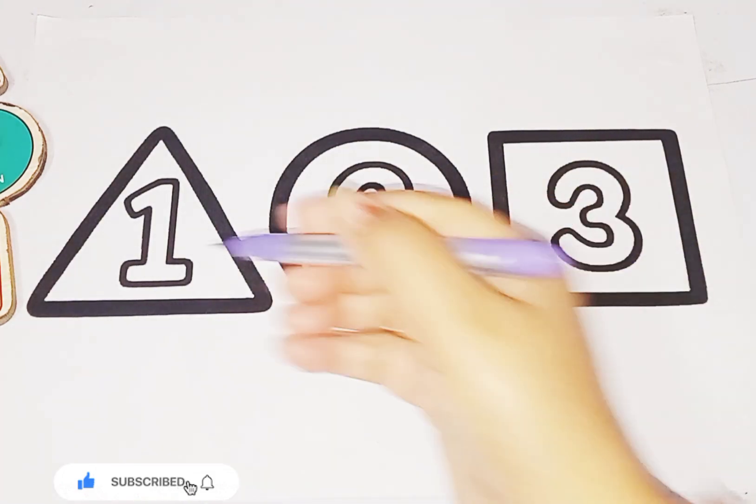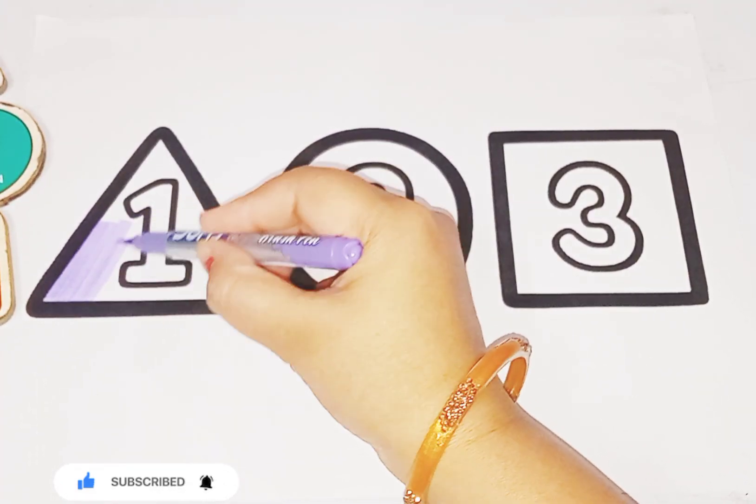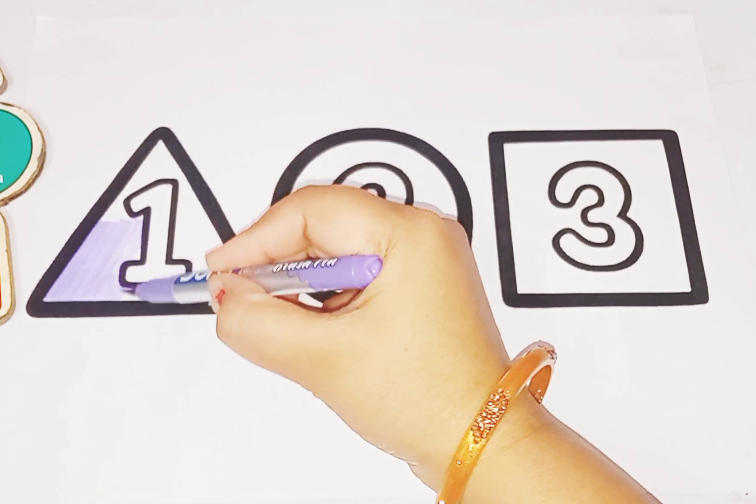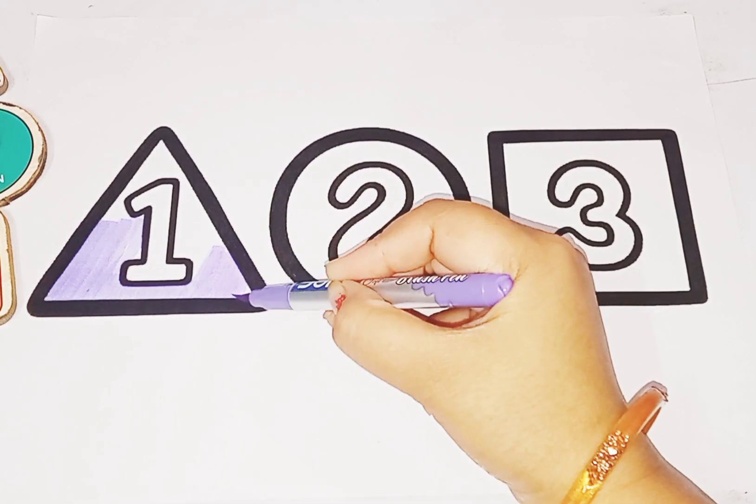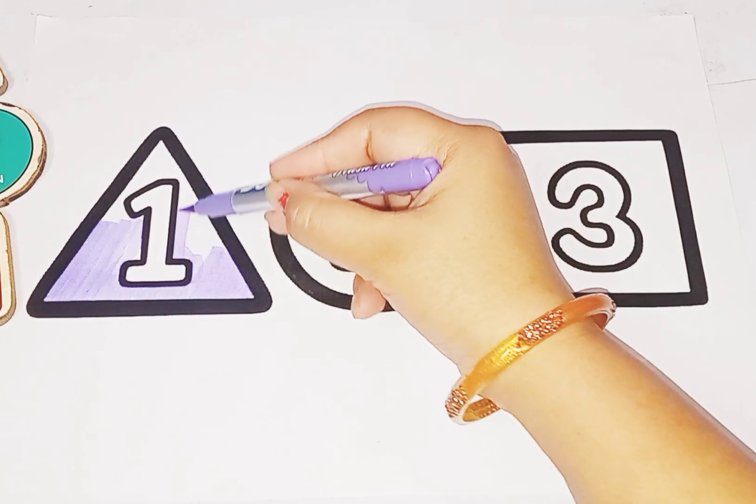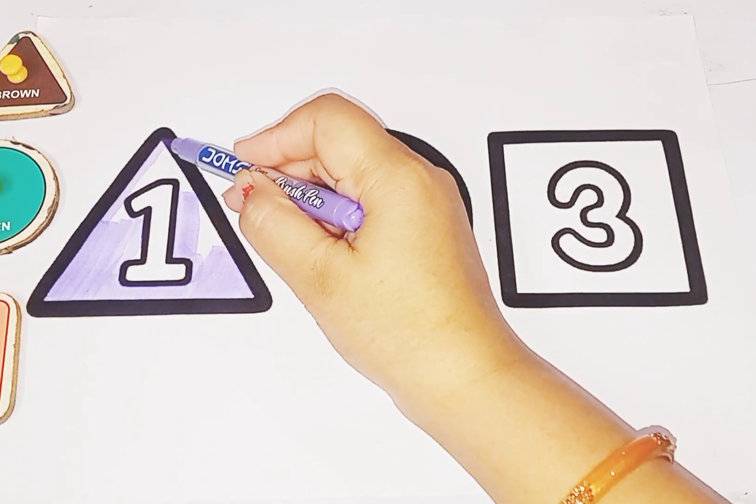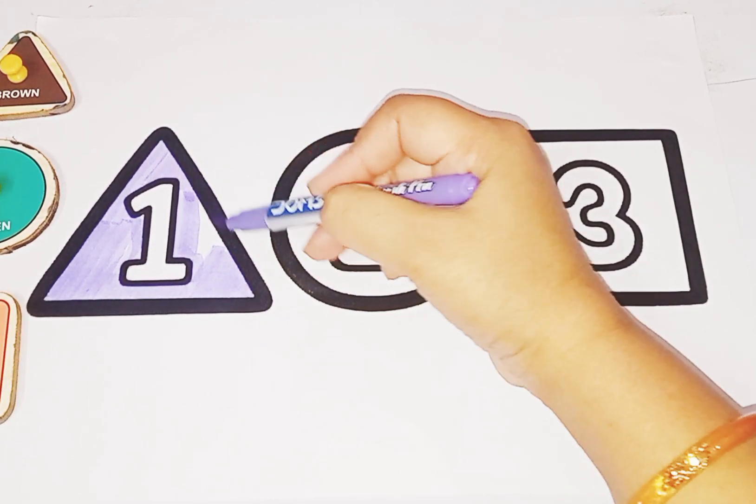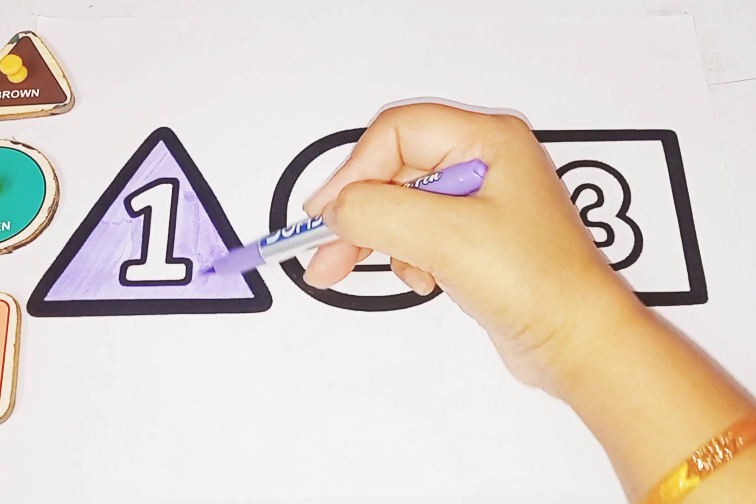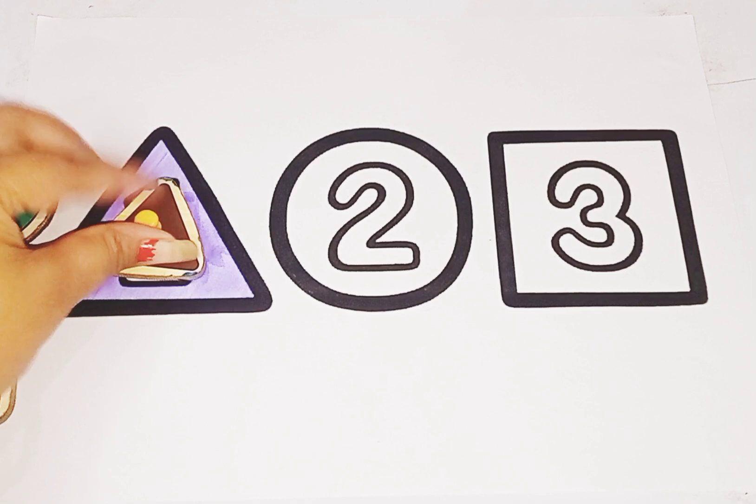Purple color triangle. Color is purple. Shape is triangle. Triangle like this. Here is triangle.